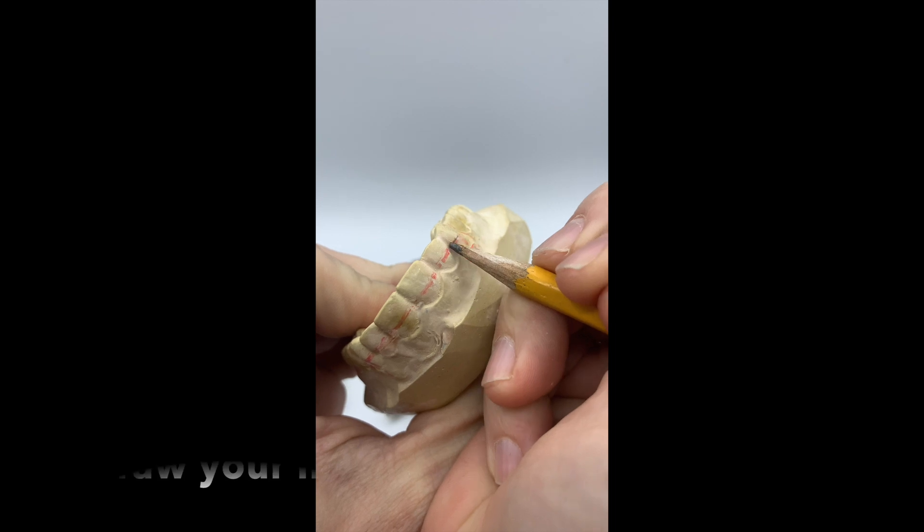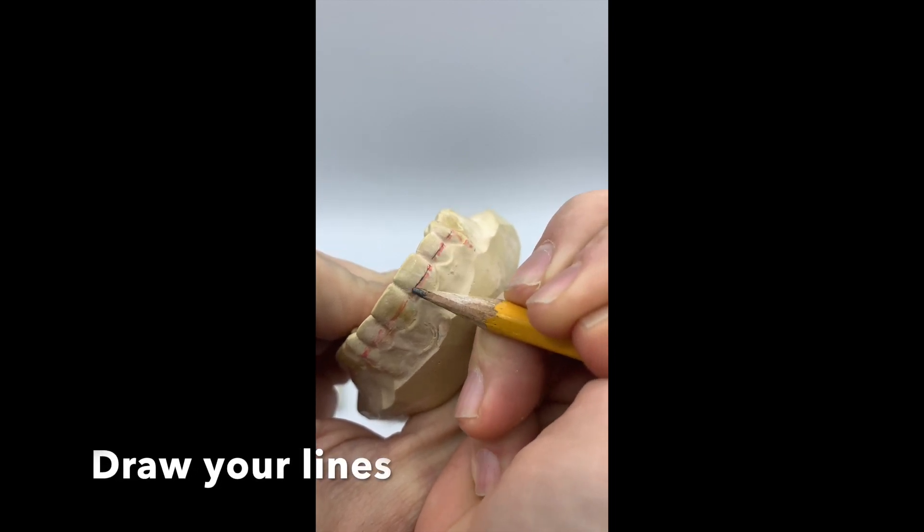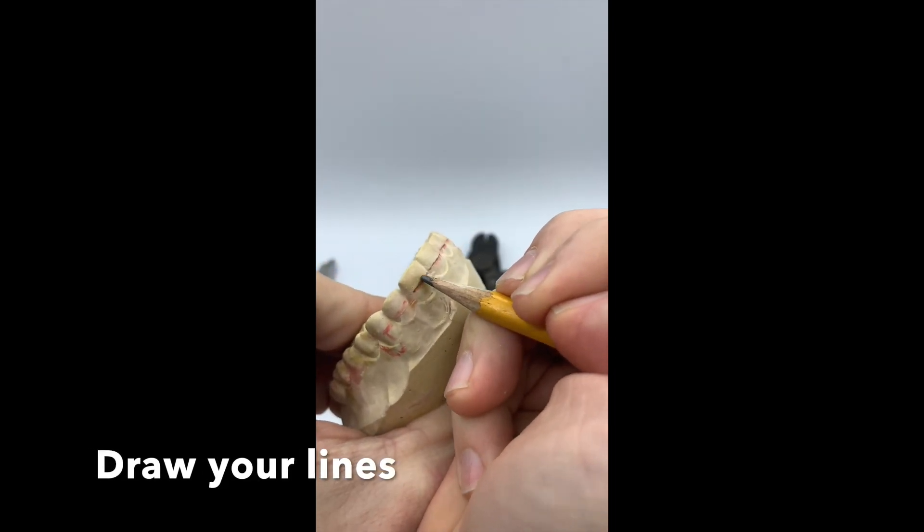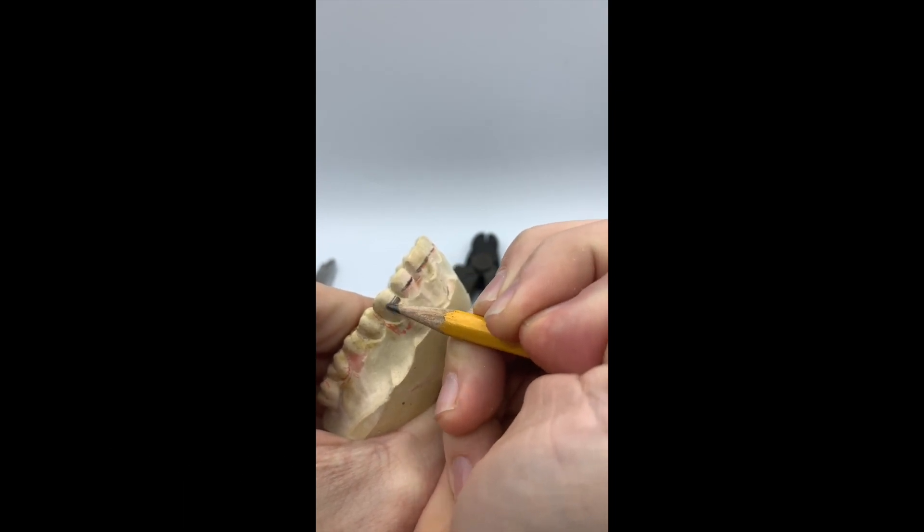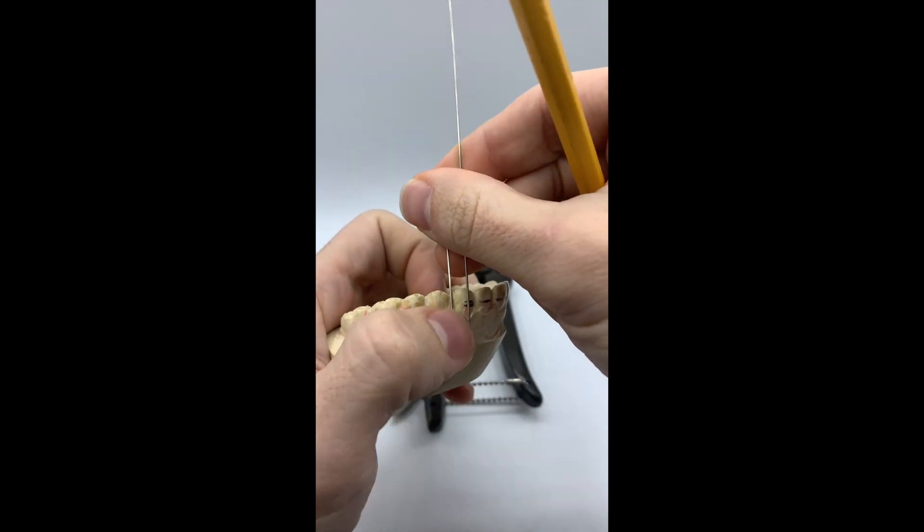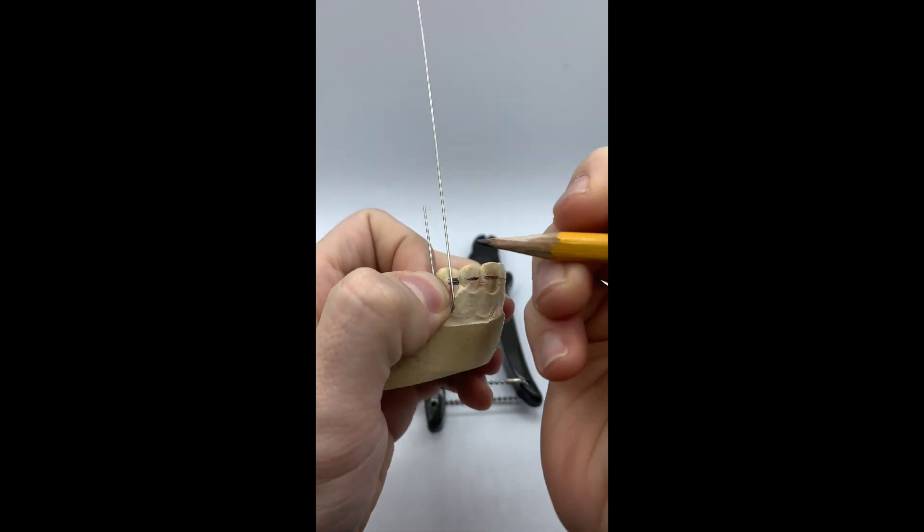The first step, we want to draw our line where our labial bow will be placed. Middle third, right above the interdental papilla. The next line will go where our cuspid loop will be placed.